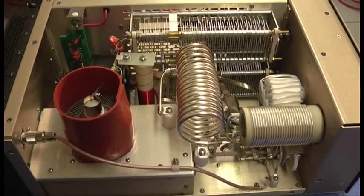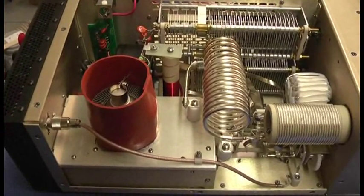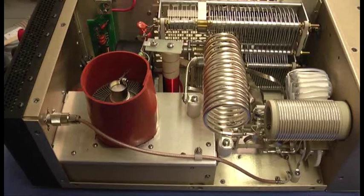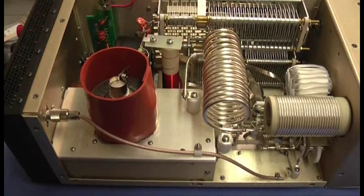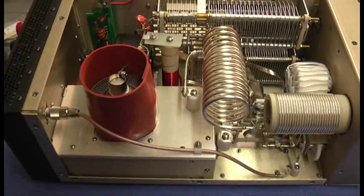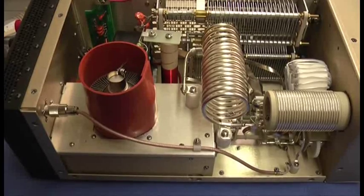The final amplifier tube is the 8877 and that's enclosed in a silicone rubber chimney and the blower then directs air through the cooling fins and out of the chassis.